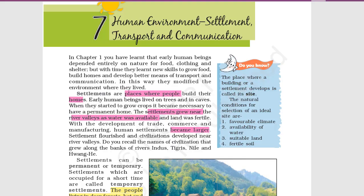Hey, what's up guys! Let us study chapter 7 of Class 7th Geography - Human Environment. In this chapter we'll study everything about human environment like settlement, the transport mediums, and the communication that people are trying to build.